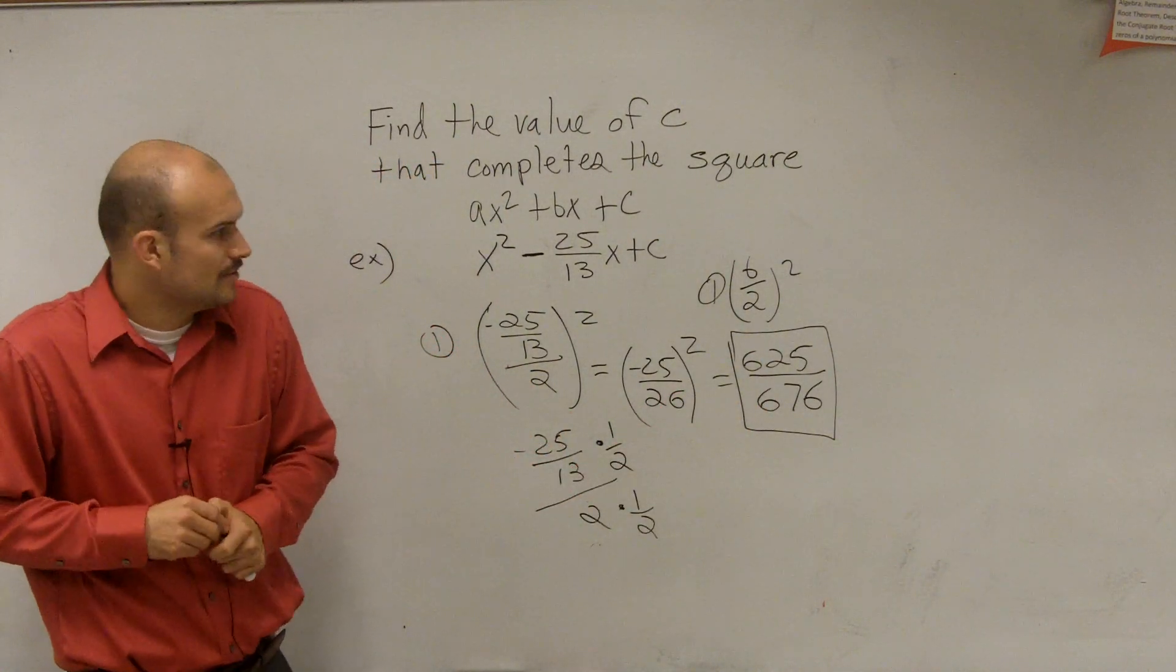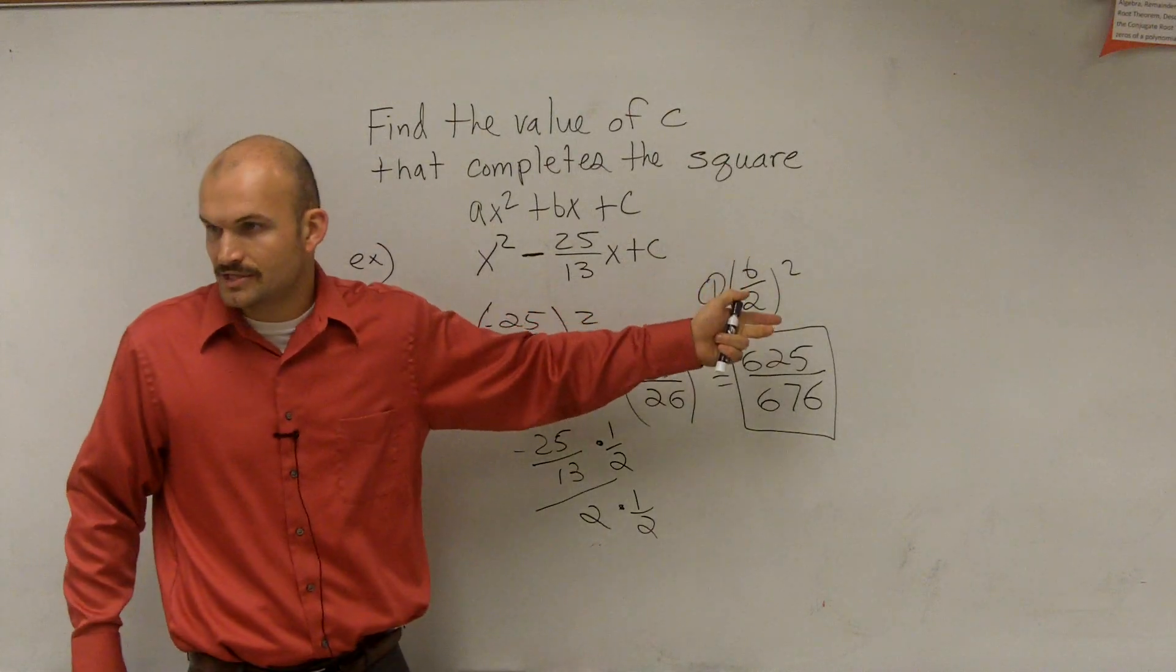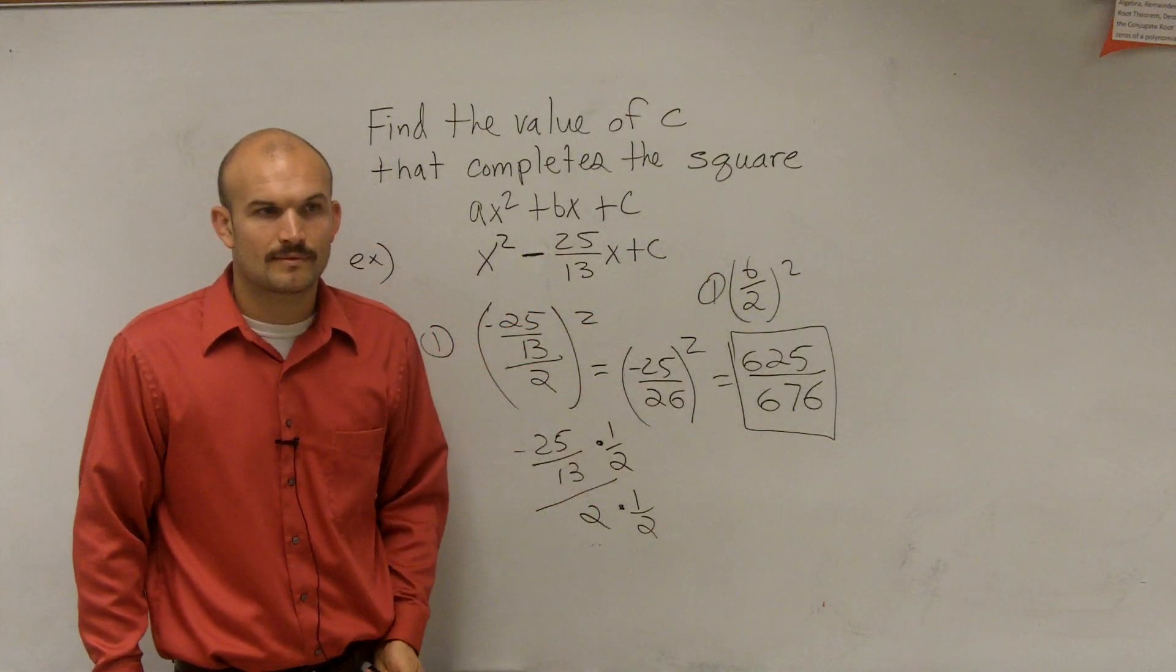OK? That's all you guys got to do. Just take your b, divide it by 2, and then square it. All right? That's it.